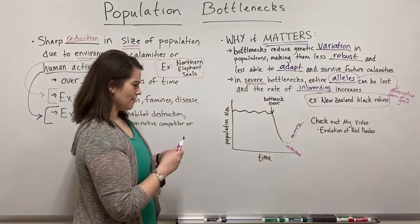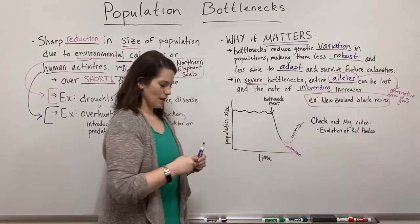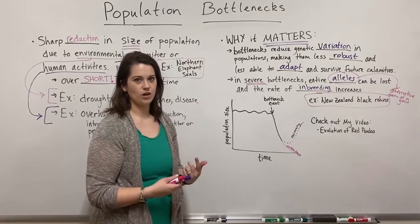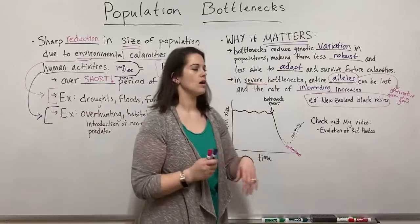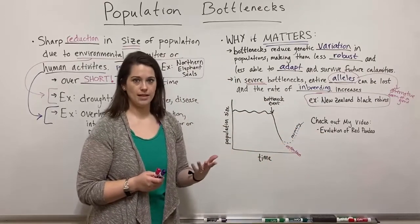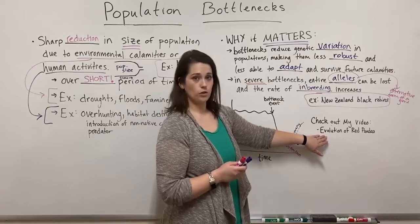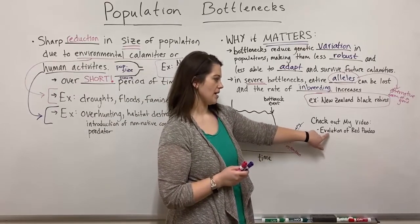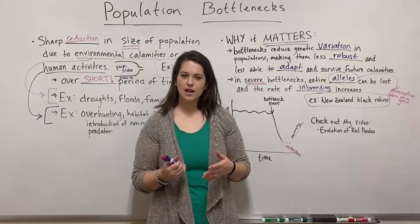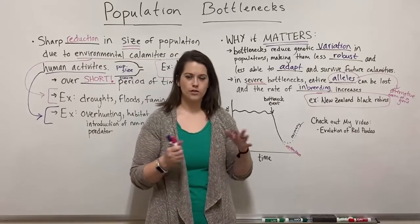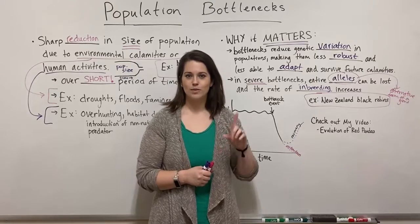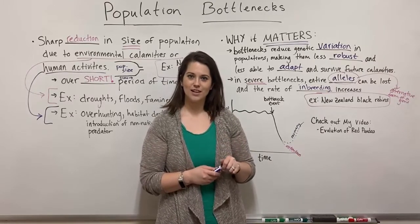Even when recovery happens, it is sometimes only due to significant human efforts to correct whatever went wrong. Check out my other video on the evolution of red pandas, where I discuss population bottlenecks in a real-world example — red pandas have gone through quite a few bottlenecks. If you're also interested in evolutionary biology topics like speciation, I have videos on allopatric versus sympatric speciation as well. Thank you for watching Biology Professor — remember to subscribe and I'll see you next time with more biology study videos.